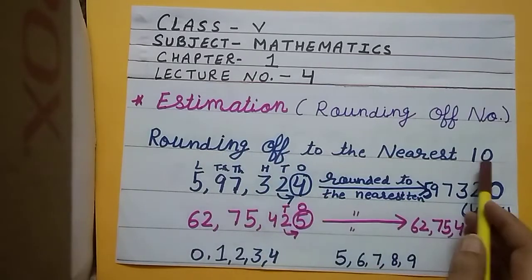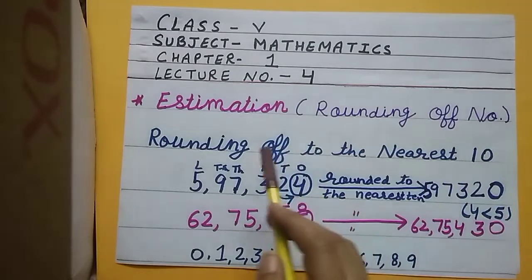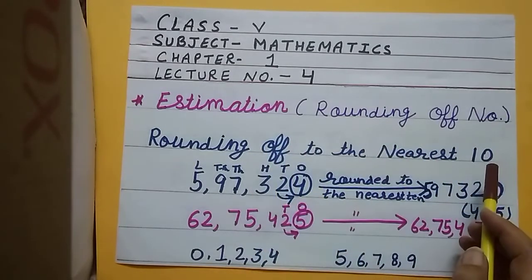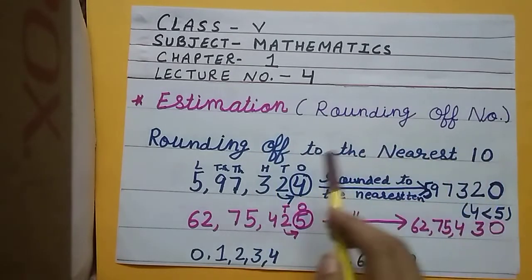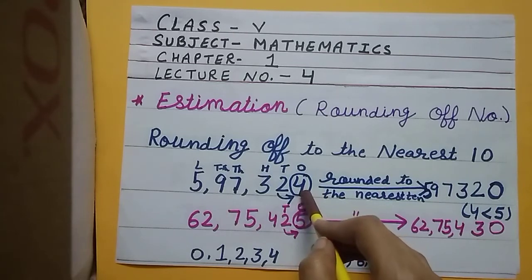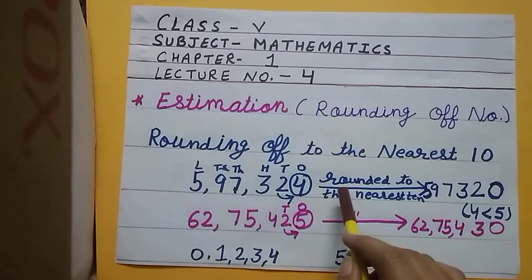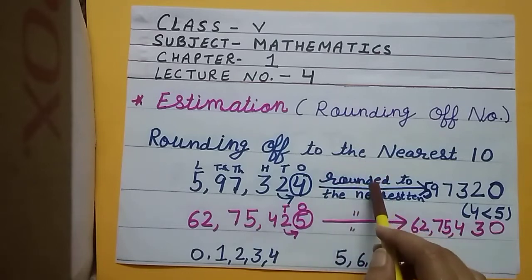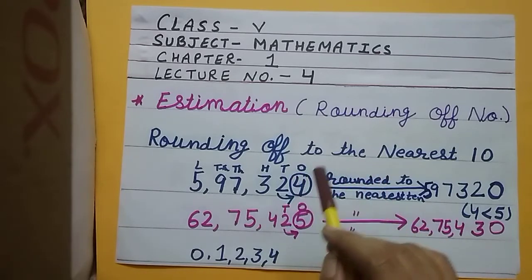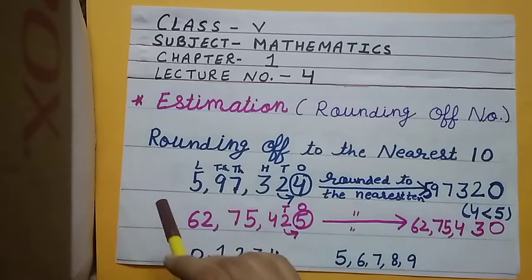Let's start with rounding off to the nearest ten. While rounding off to the nearest ten, look at the ones place. If the digit in the ones place is less than 5, then replace the ones digit by 0 and write the remaining digits as it is.